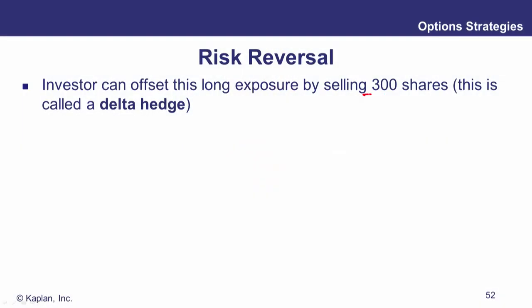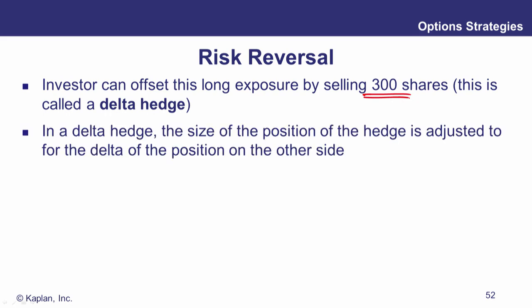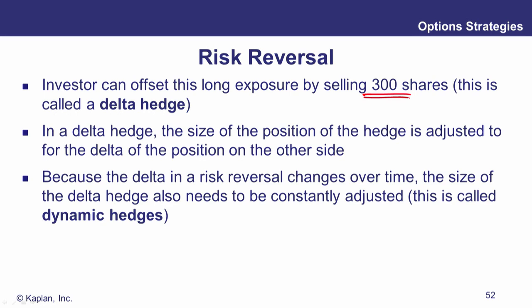So maybe you would sell short 300 shares to remove your delta of 0.3 times 1,000 in order to delta hedge that position. That would be a risk reversal. We offset by selling 300 shares — that's dynamic delta hedging. It's dynamic because delta does change as the underlying changes. You are going to have to dynamically hedge this position: your delta changes over time, and you're going to have to adjust the size of your hedge to reflect that. That's called dynamic hedging.